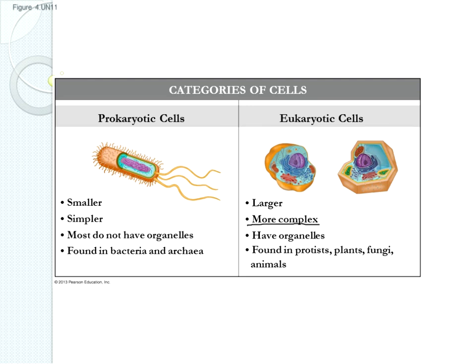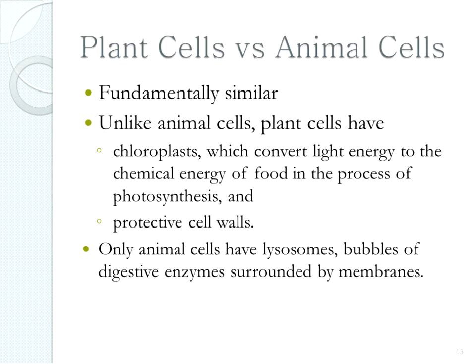Eukaryotic cells are more complex. Where prokaryotic cells do not have organelles, eukaryotic cells have membrane-bound organelles each with a specific function. When we talk about eukaryotic cells, there's another distinction: plant cells versus animal cells. They are fundamentally similar because they are both eukaryotes, with just a couple of organelle differences.